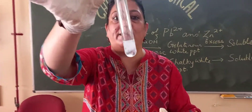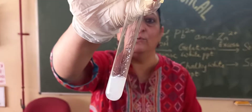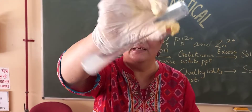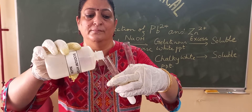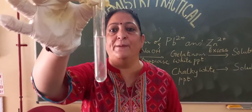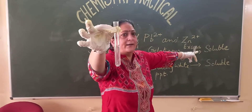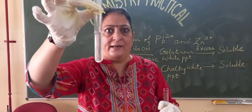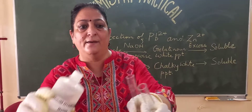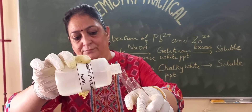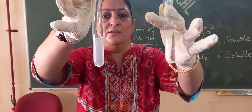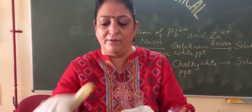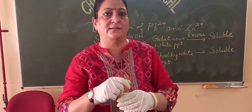You will see something like gelatin floating, and something is sticking to the walls as well — that is why it is called a gelatinous white precipitate. Now in the second step I add NaOH in excess. The precipitate becomes soluble — this is what happens with the lead cation. Now let's see what happens to the gelatinous white precipitate when we add NaOH in excess — the precipitate also becomes soluble. So with NaOH, the behavior of lead cations and zinc cations is the same.